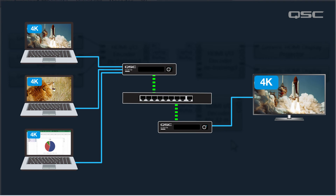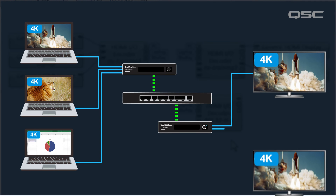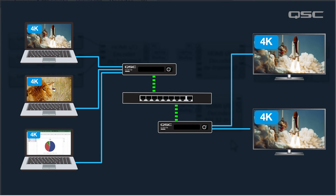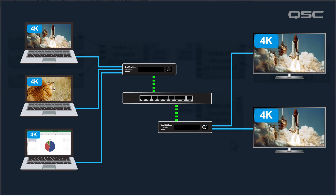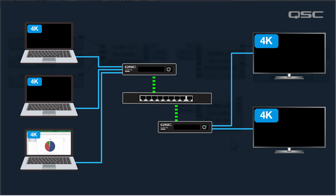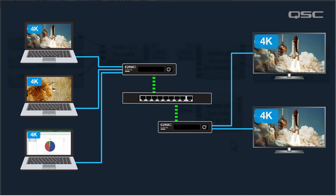Also, don't forget that in order to achieve dual outputs on the NV Series, all video sources whose AV stream is wired to this decoder will be limited to 1080p60, which is done through EDID.